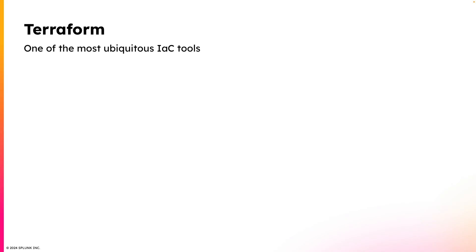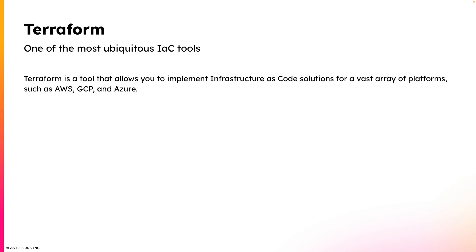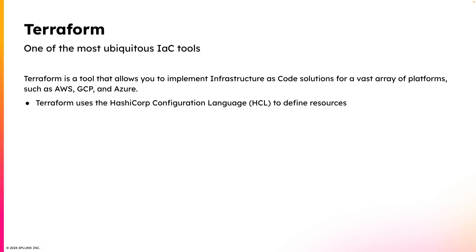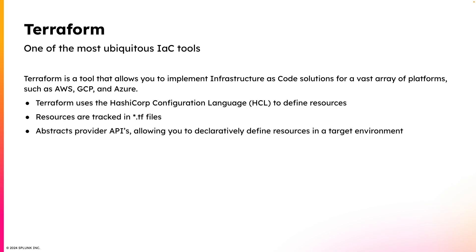Now that we've talked about infrastructure as code, let me introduce you to one of the most ubiquitous IAC tools in the industry: Terraform. Terraform allows you to implement infrastructure as code across a vast number of platforms like AWS, GCP, and Azure. It uses the HashiCorp Configuration Language to define resources. Those resources are defined and tracked in .tf files. And Terraform abstracts the provider's API so that you can declaratively define resources in a target environment.